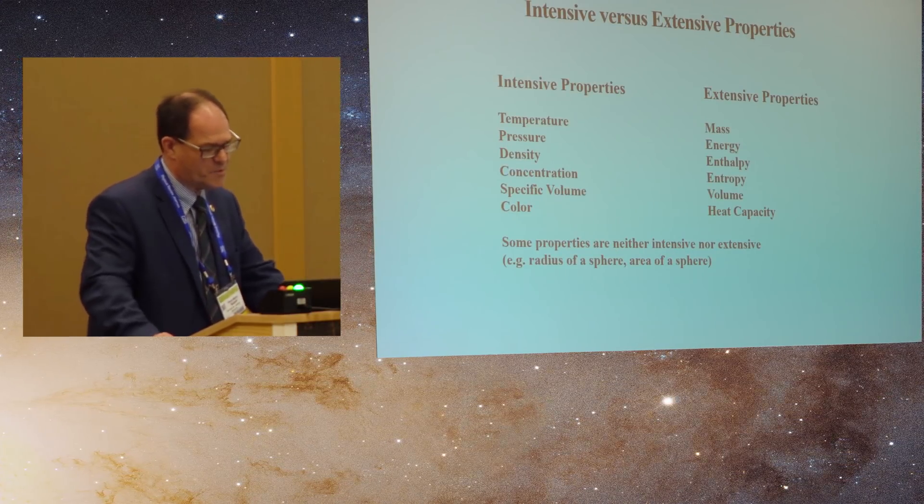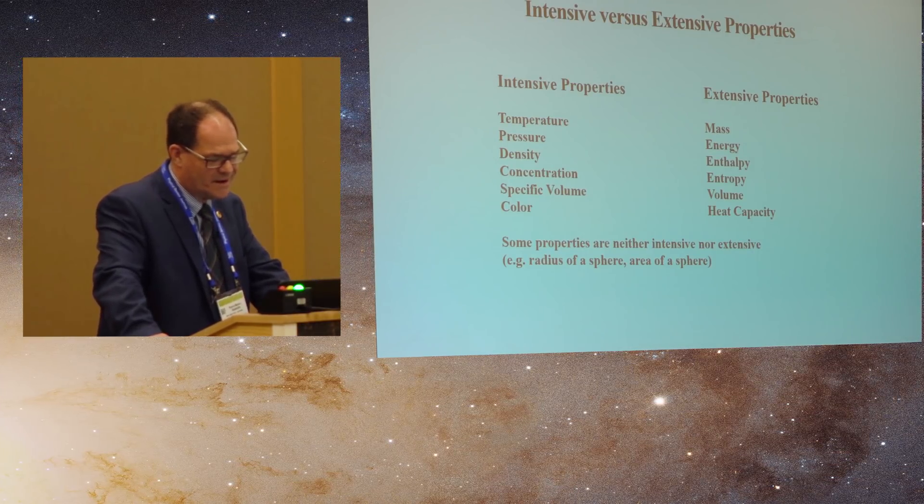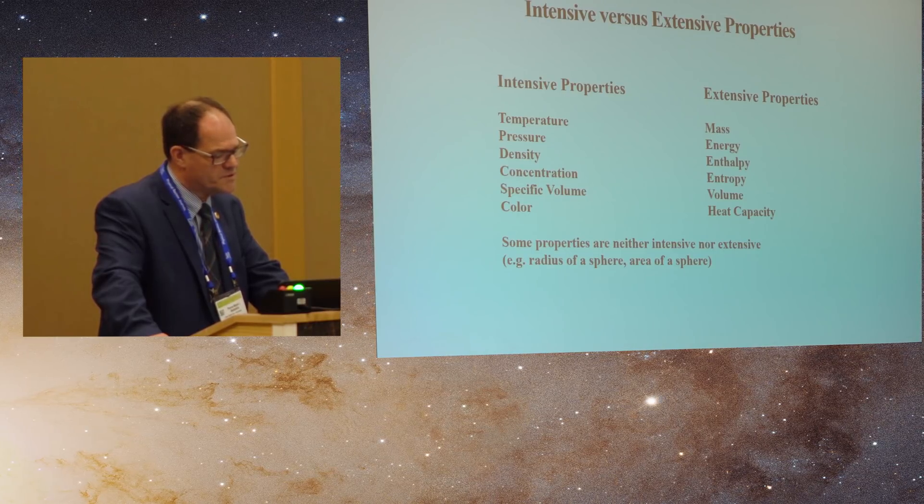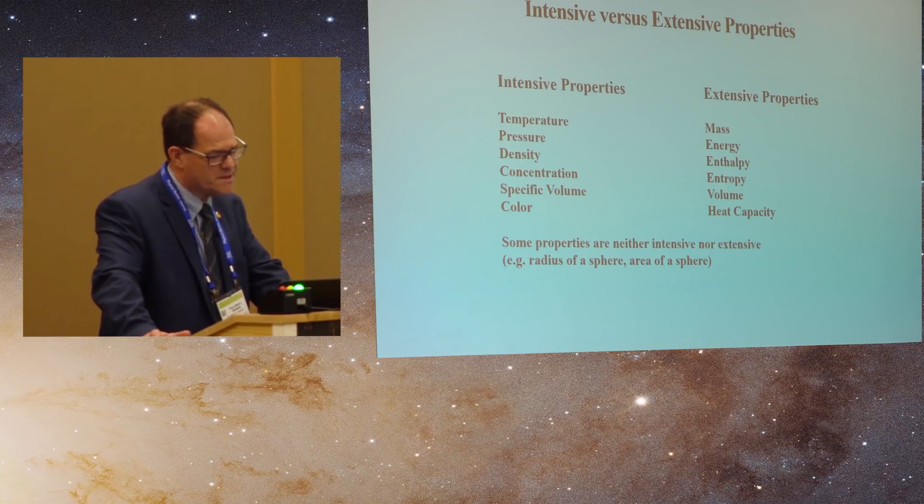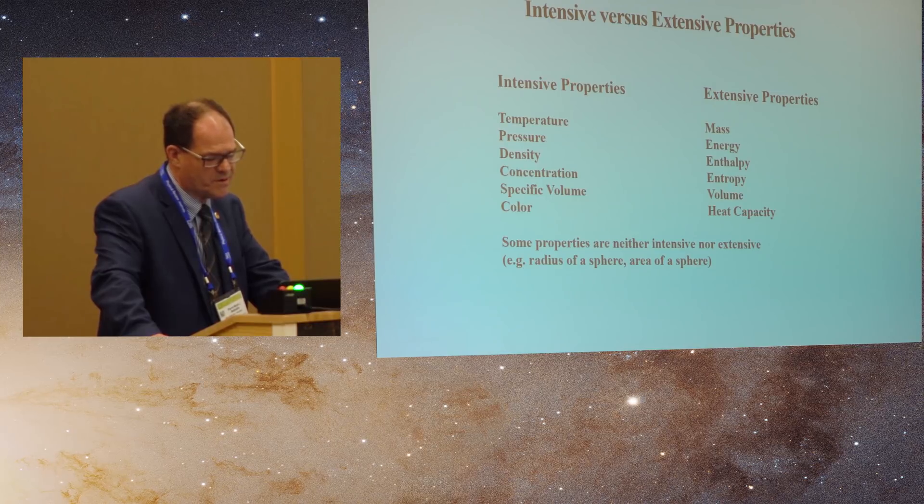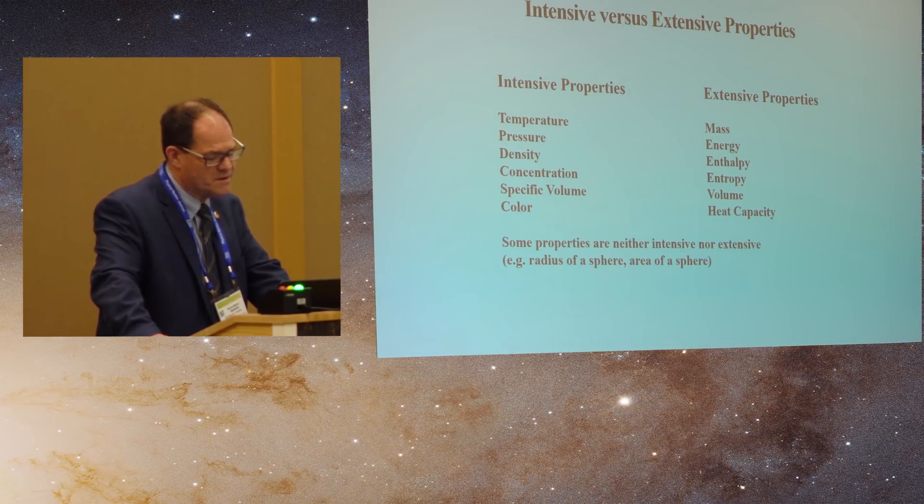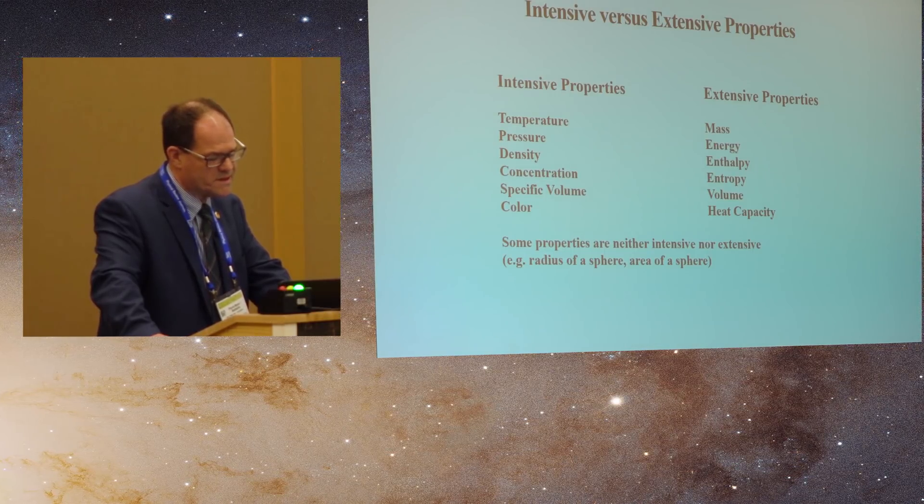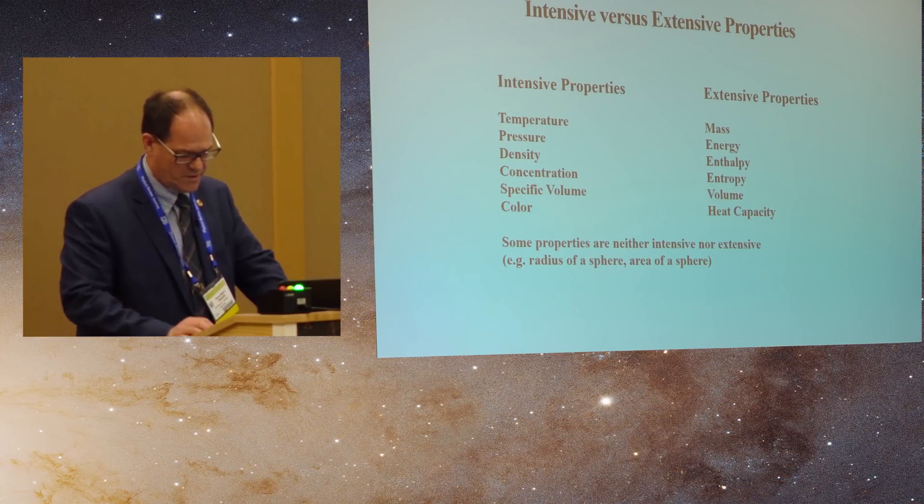So just a simple review of some elementary ideas here in thermodynamics. We have intensive properties like temperature, pressure, density, concentration, specific volume and color. And we have extensive properties like mass, energy, enthalpy, entropy, volume and heat capacities. And then of course there are some properties that are neither intensive nor extensive like the radius of a sphere or the area of a sphere.